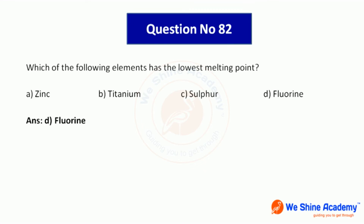Question number 82: Which element has the lowest melting point? Options: zinc, titanium, sulphur, fluorine. Zinc and titanium have very high melting points. Fluorine has a very low melting point. Answer: fluorine, option B — lowest melting point.